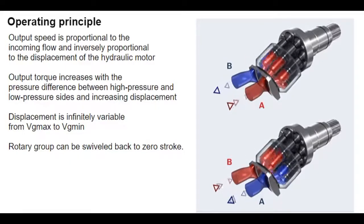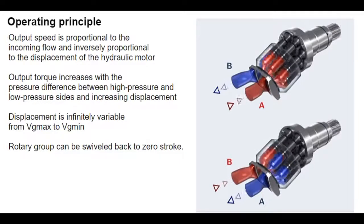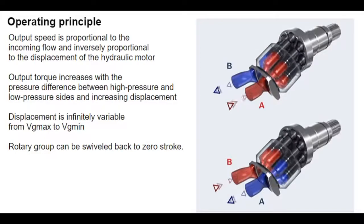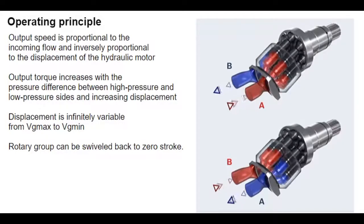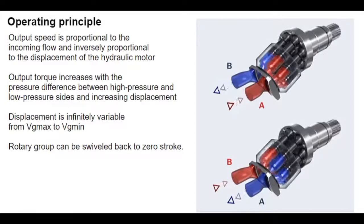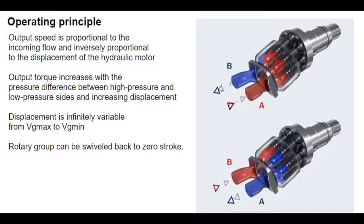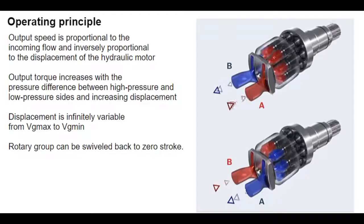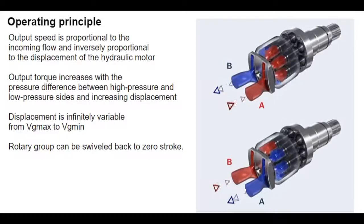Displacement is infinitely variable from VG-max to VG-min. The more the rotary group is swiveled back, the higher the output speed and the lower the output torque. The rotary group can be swiveled back to zero stroke. The direction of output rotation depends on the supply of hydraulic fluid. If it is supplied from the A-side (left), the motor rotates clockwise. If it is supplied from the B-side (right), the motor rotates counterclockwise.